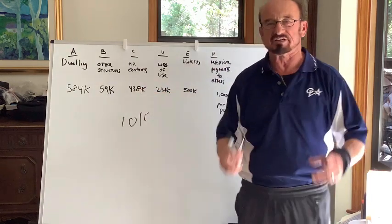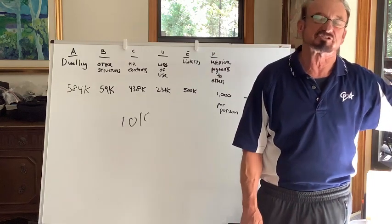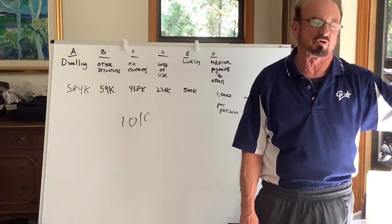B, other structures - things that are not attached. Gate, decks that are not attached, detached garage, well sheds, storage sheds.